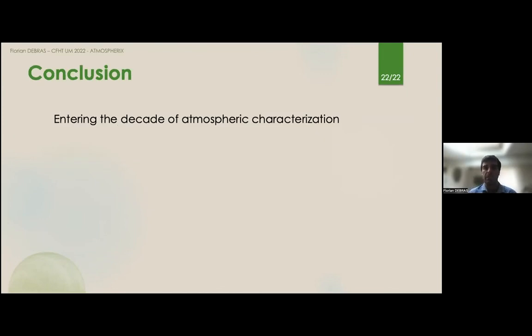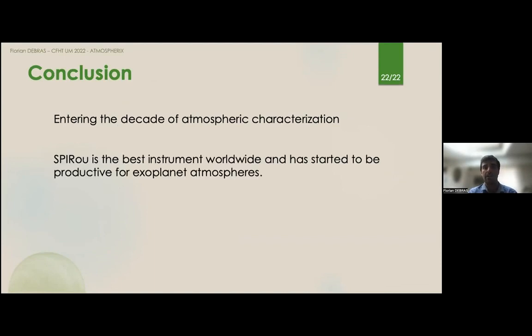In conclusion, I've shown that we have entered really the decade of atmospheric characterization, and that SPIRou, to date, is the best instrument worldwide to do it. And it has really started to be productive for exoplanet atmospheres. I didn't mention, but there is also a characterization of TOI-1278b by Peltier et al. in 2021. And I've shown that there is a huge complementarity with space-based instruments, such as JWST and Ariel.